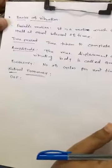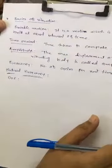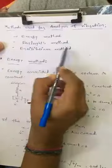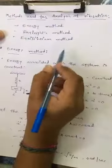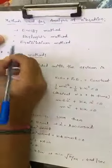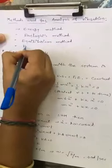These are all the basic parameters and basic terminology for vibration of any component. For analysis of any vibratory body there are four methods used: one is the energy method, second is Rayleigh's method, third is the equilibrium method, and fourth is Newton's method.